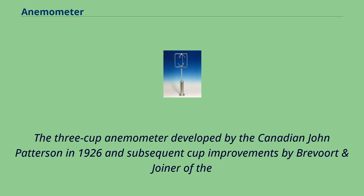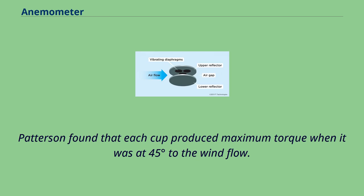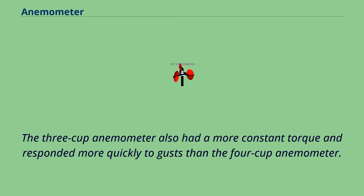The three-cup anemometer developed by Canadian John Patterson in 1926 and subsequent cup improvements by Brevoort and Joyner of the United States in 1935 led to a cup wheel design with a nearly linear response and had an error of less than 3% up to 60 mph. Patterson found that each cup produced maximum torque when it was at 45 degrees to the wind flow. The three-cup anemometer also had a more constant torque and responded more quickly to gusts than the four-cup anemometer.